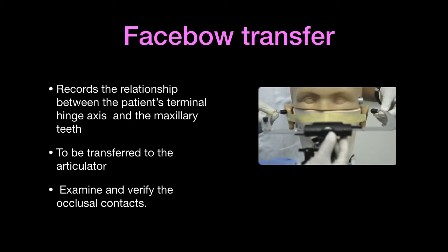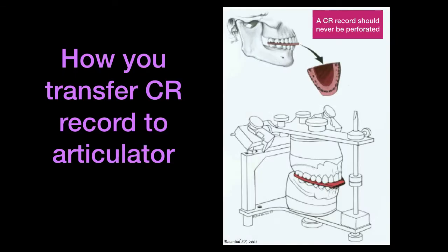The facebow records the relationship between the patient's terminal hinge axis and the maxillary teeth, enabling these to be transferred to the articulator. Casts are articulated in centric relation and then brought together to examine the occlusal contacts and verified clinically. The maxillary cast is seated on the indentation of the facebow fork after the facebow is attached to the articulator. For the mandibular cast mounting, the incisal pin should be lowered sufficiently to compensate for the thickness of the centric relation record.